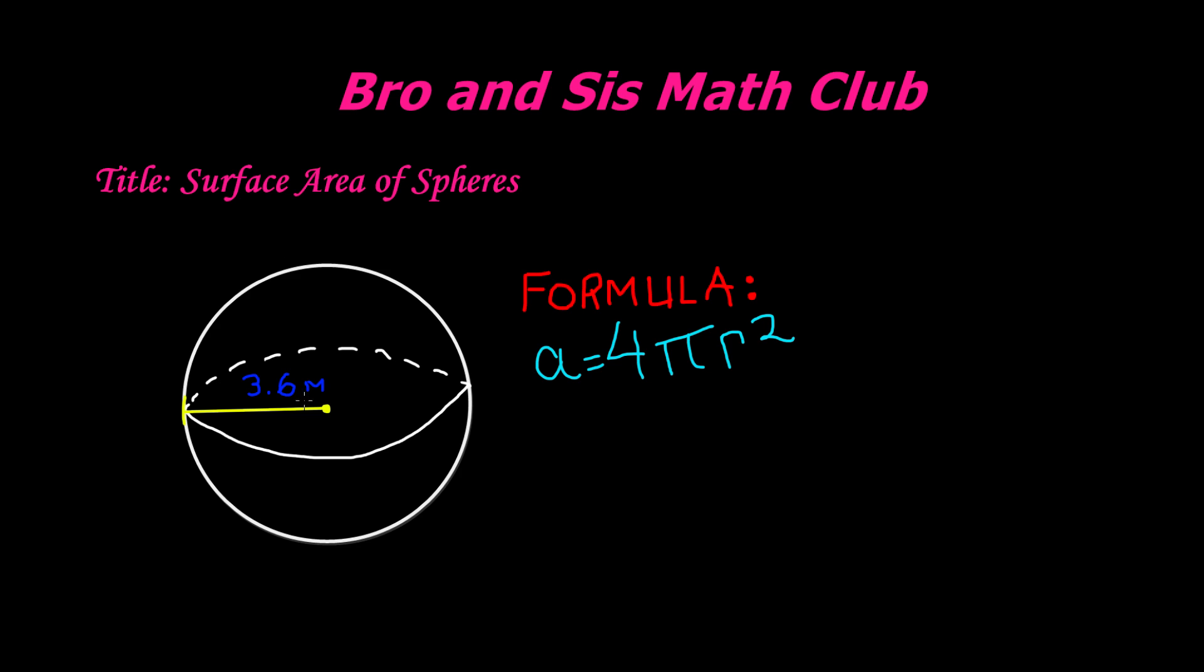So 3.6 meters will be substituted for r. If we go ahead and rewrite this, we will say area is equal to 4 times pi, which is approximately equal to 3.14, times radius squared, which is 3.6 squared.